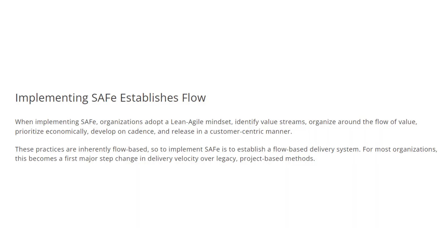Let us get into today's topic: implementing SAFe establishes flow. When implementing SAFe, organizations adopt a lean-agile mindset, identify value streams, organize around the flow of value, prioritize economically, develop on cadence, and release in a customer-centric manner. These practices are inherently flow-based, so to implement SAFe is to establish a flow-based delivery system. For most organizations, this becomes a first major step change in delivery velocity.